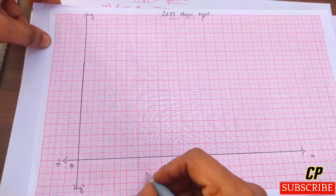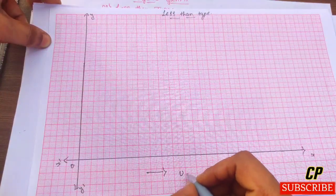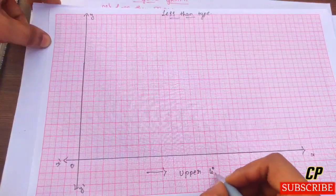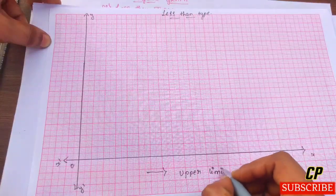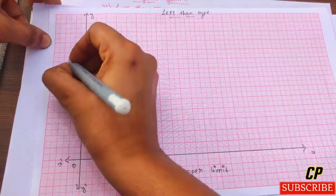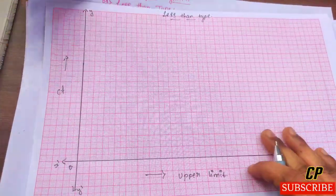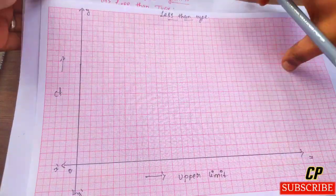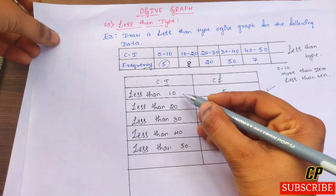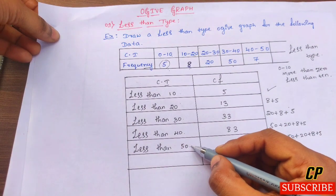On the x-axis we mark the upper limits, and on the y-axis we mark the cumulative frequency. The values depend on the data given.